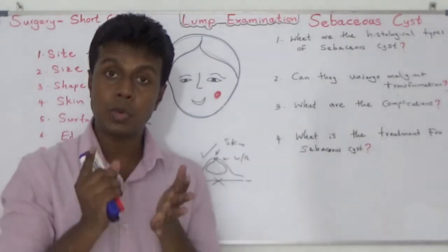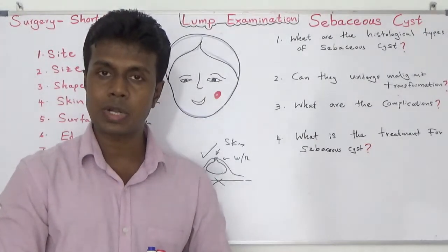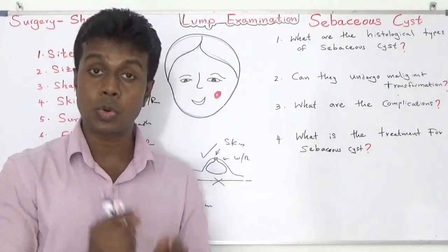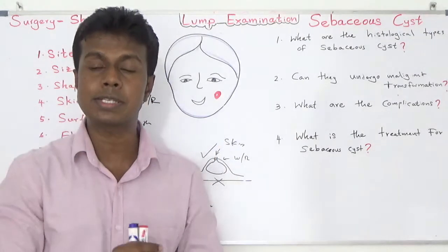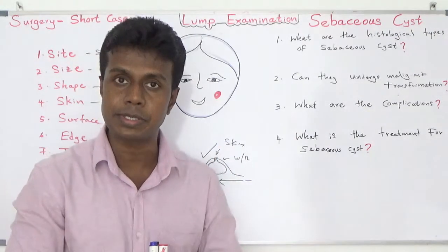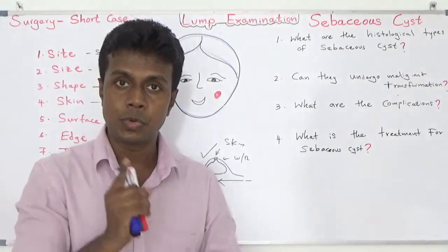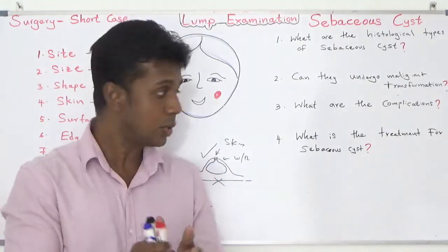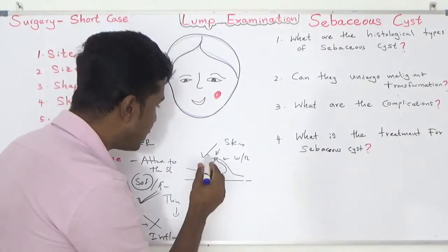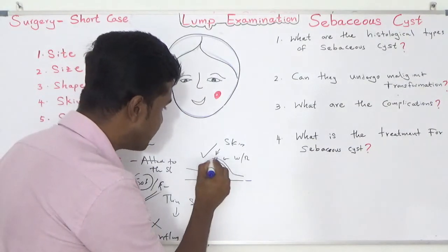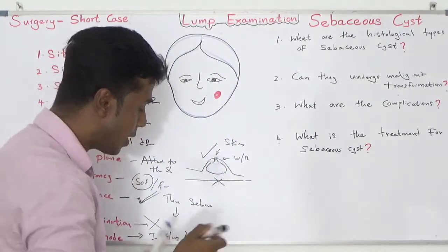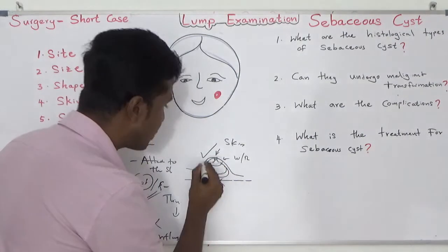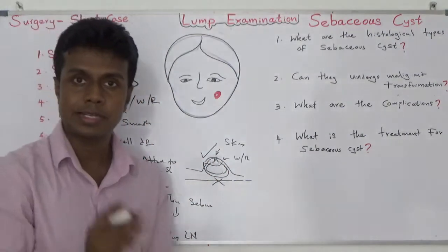I would like to offer excision under local anesthesia. If it is infected, local anesthesia may not work in the surrounding area because of the inflammation — in that case, you may have to do general anesthesia. During surgery, you have to remove the punctum, excise it, and remove the rest of the cyst.